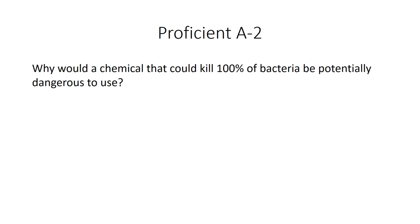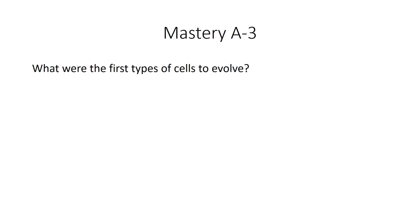Why would a chemical that kills 100% of bacteria be potentially dangerous to use? It depends where you're using it — disinfecting a surgical station would be fine, but as an antibiotic it would kill all your beneficial bacteria too. What were the first types of cells to evolve? It would have to be something closer to bacteria, since whatever the ancient ancestor was, one population eventually became eubacteria and the other became the ancestors of archaeobacteria and later eukarya.